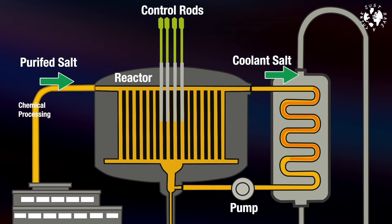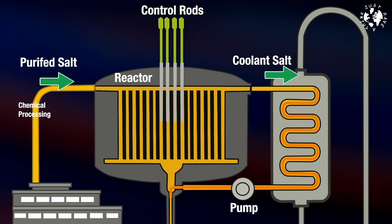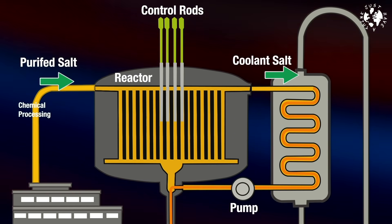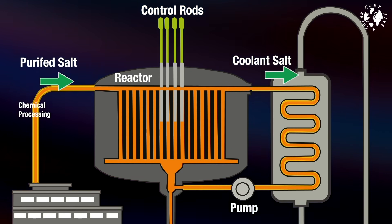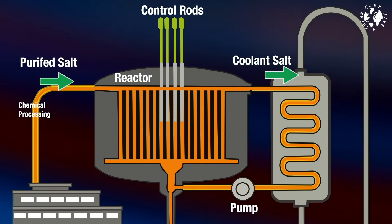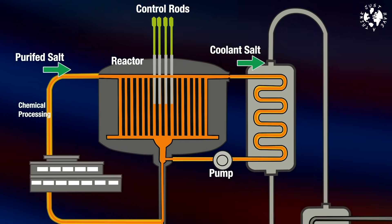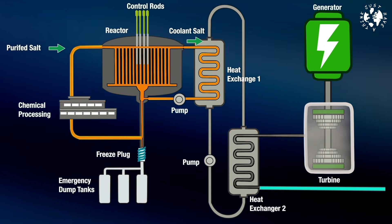In a molten salt reactor, instead of using solid uranium fuel pellets inside fuel rods surrounded by highly pressurised water, the thorium fuel is dissolved directly into superheated molten salt which then acts as the coolant and provides convective heat which goes through a heat exchanger to drive the turbine.